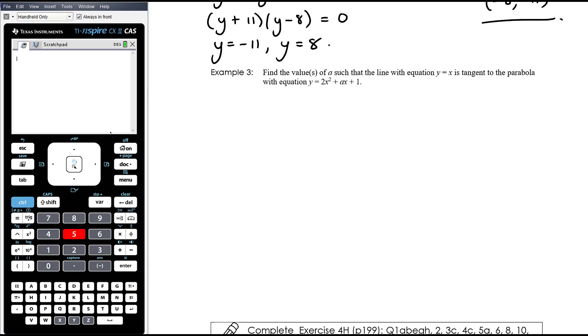All right, example 3 here. Find the value or values of a such that the line with equation y equals x is tangent to the parabola with equation y equals 2x squared plus ax plus 1. Okay, so we've got y equals x. I'm just going to do a rough sketch here. I'll get rid of it in a second. Looks like that. We've got a quadratic with an unknown coefficient here. It's clearly a positive quadratic. I don't know where it is. It's got a y intercept at 1. Wherever it might be, what we want to find is what is its equation going to be so that the line is tangent to the parabola.